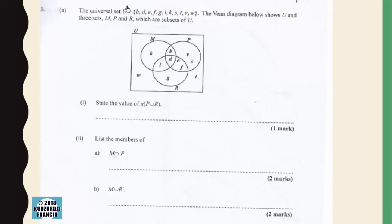Let's continue with question 3. The universal set U is equal to {b, d, e, f, g, i, k, s, t, v, w}. The Venn diagram below shows U and three sets M, P, and R which are subsets of U. We should state the value of the number of elements in P union R.